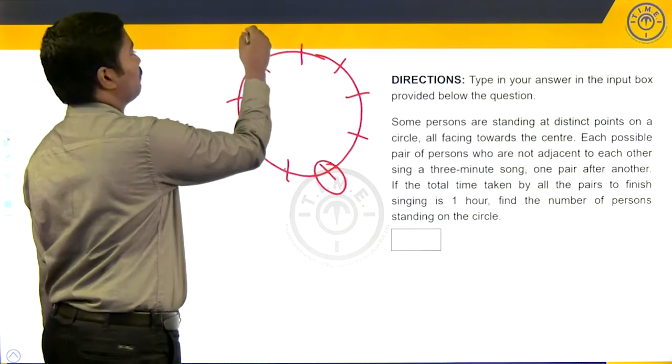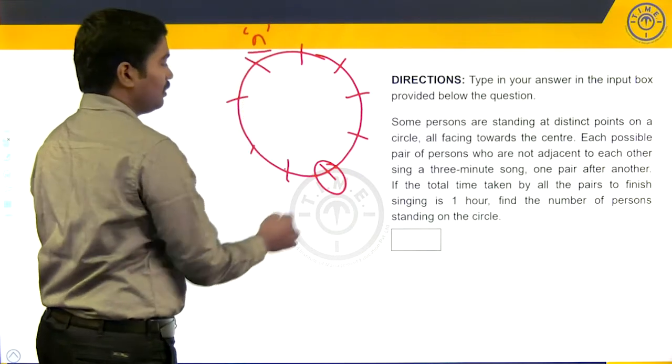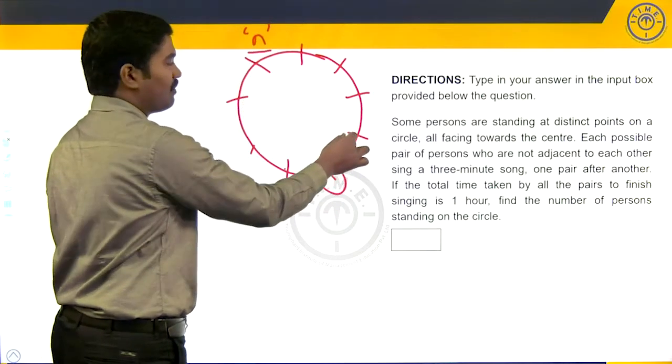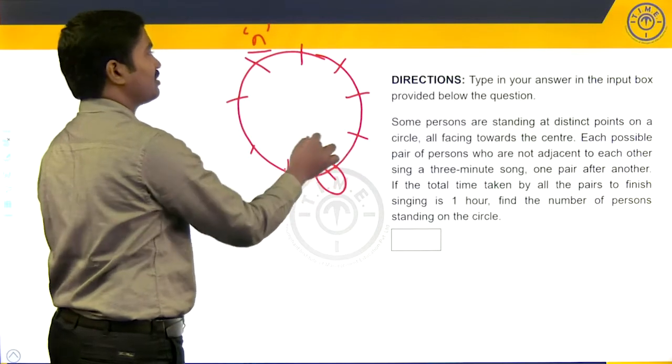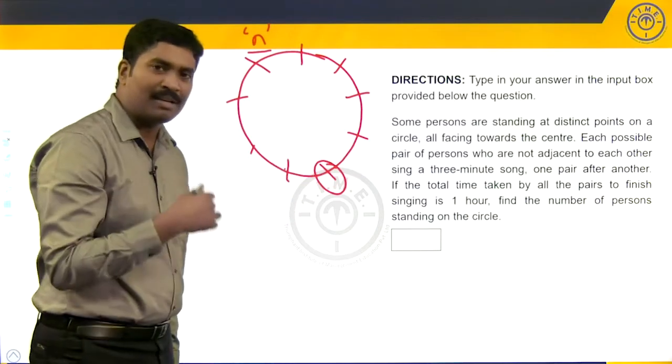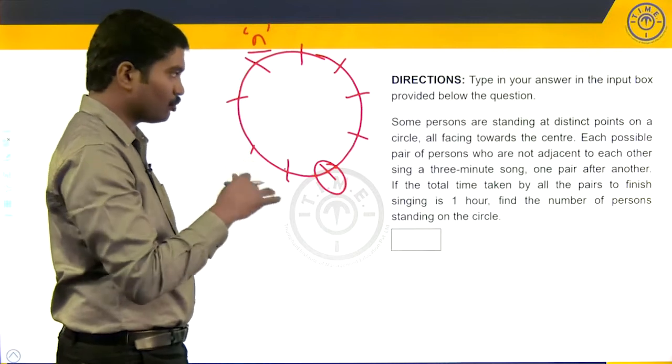Let's say the circle has n persons standing. This person is chosen. Apart from himself and his two immediate neighbors, apart from these three, the next person can be picked in n minus three ways. So, those are the different pairs.